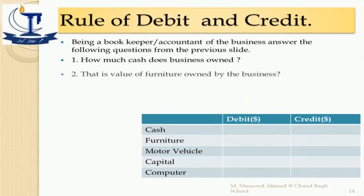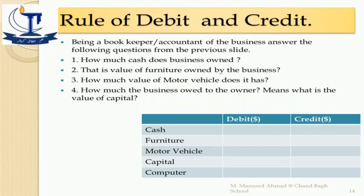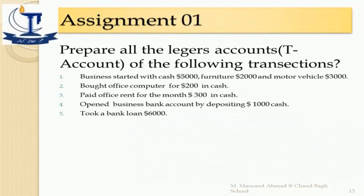After the second transaction, how much cash do you have? Previously you had $5,000; you paid $200, so what would be the balance? Furniture value will remain the same, motor vehicle will remain the same, and the owner's capital has no change from this transaction. However, there is a change in computer — previously you didn't have a computer, now you do — so it affects two ledgers: cash is decreasing and computer is increasing.